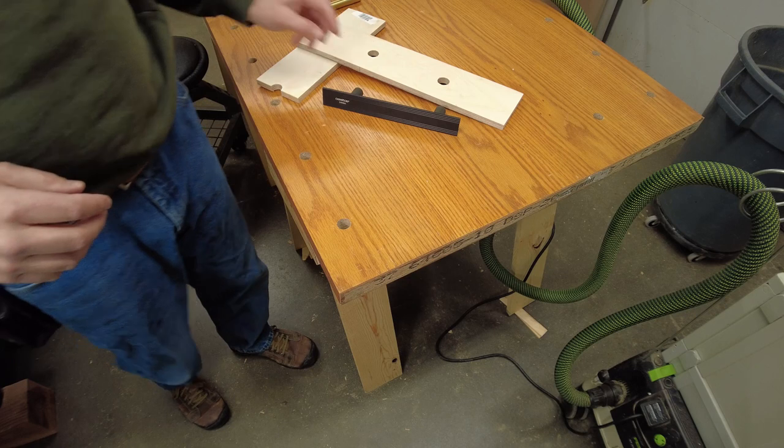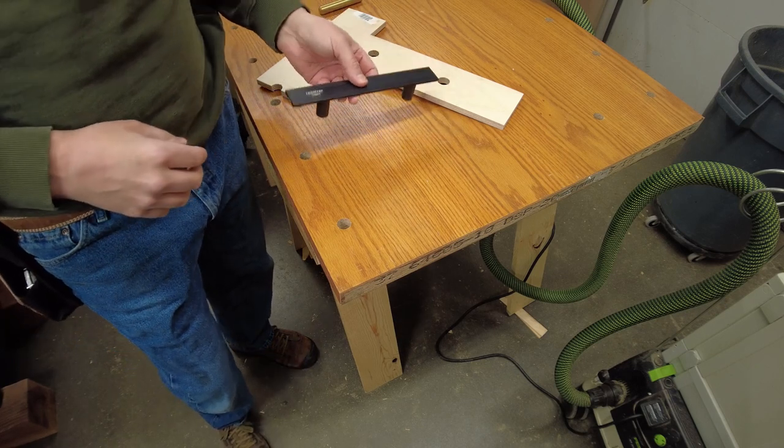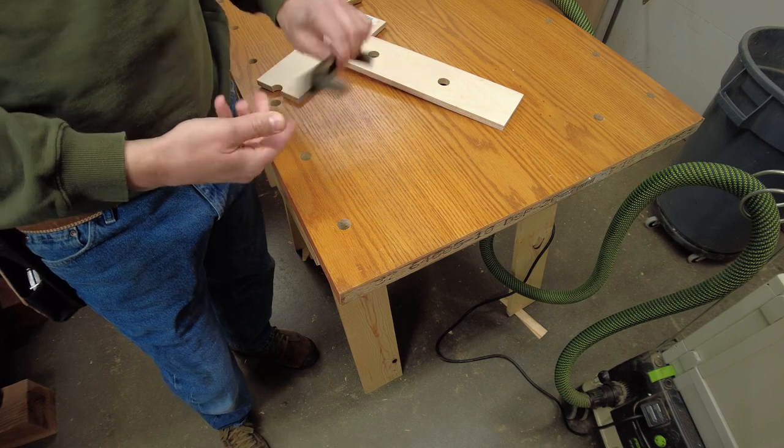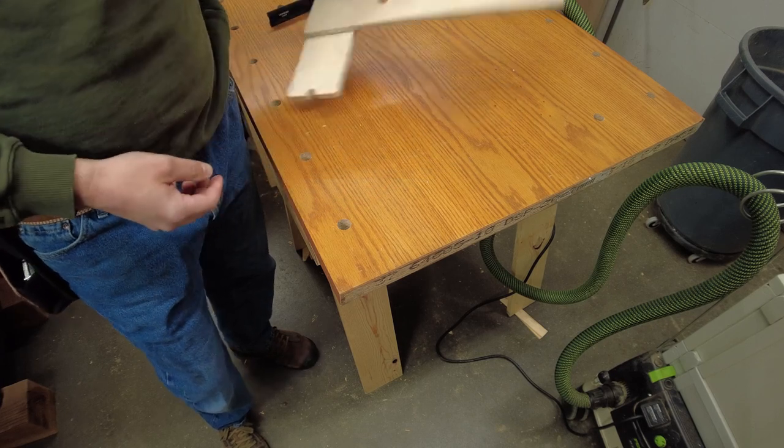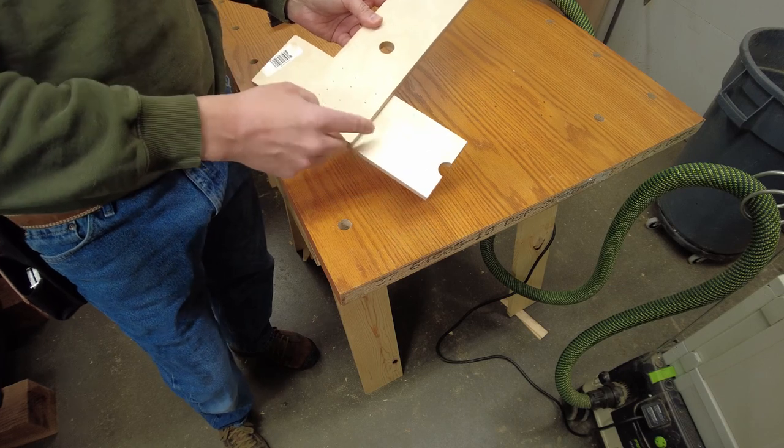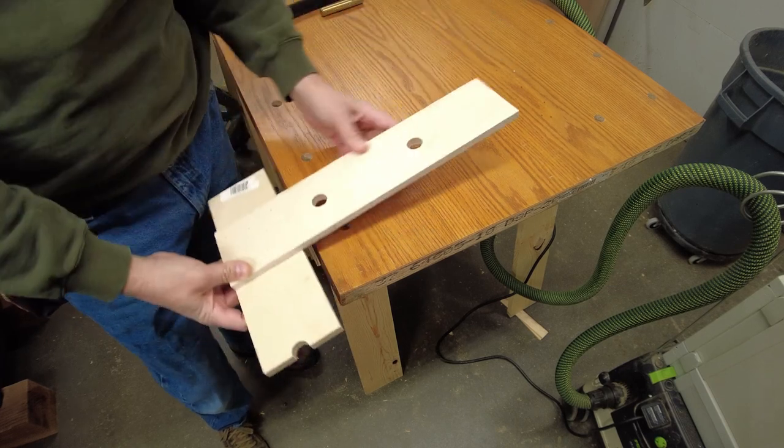All right almost done making holes. I just need to make a handful more for my planing stops because they require two bench dog holes for each one. And so what I did is I took my jig and I just cut it in half and then I glued and nailed this end here to make a t-square.